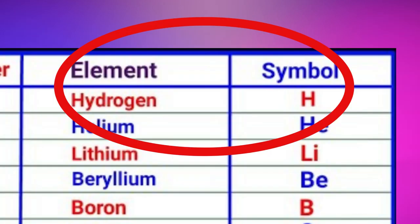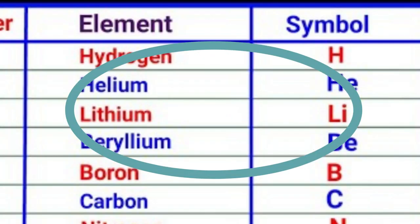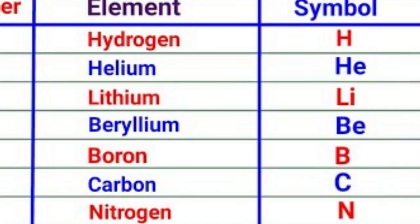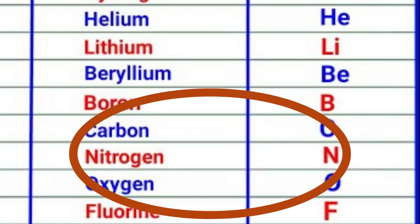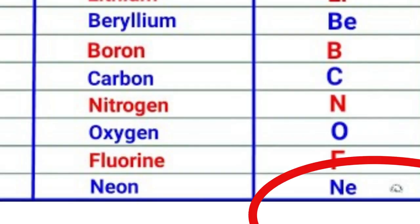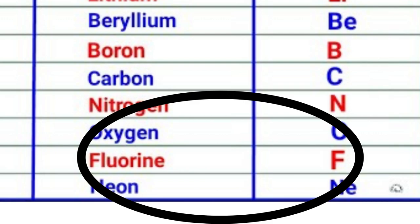The first 10 elements and their symbols: hydrogen (H), helium (He), lithium (Li), beryllium (Be), boron (B), carbon (C), nitrogen (N), oxygen (O), fluorine (F), and neon (Ne).